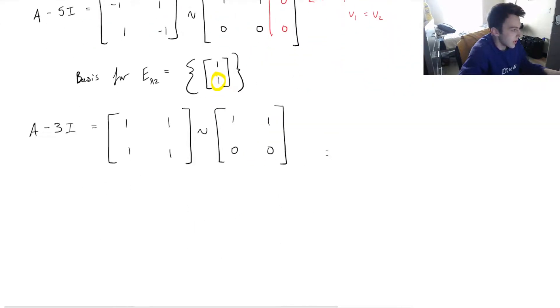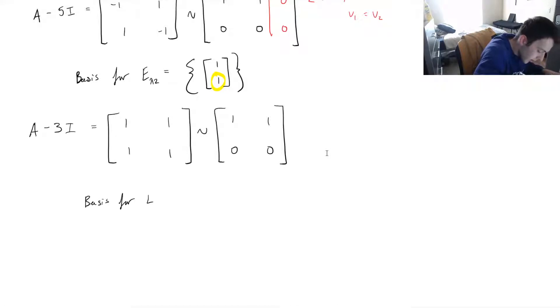So then we can say that the basis for E lambda 1 is equal to, and similarly, you would get negative 1, 1, like this.